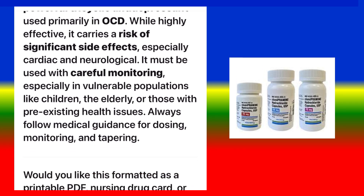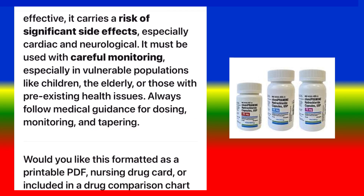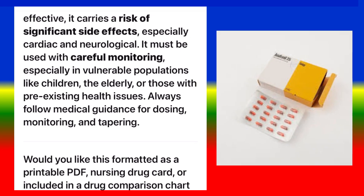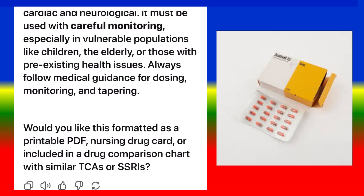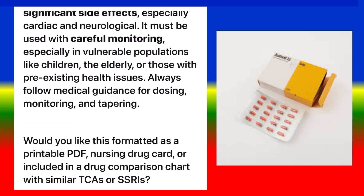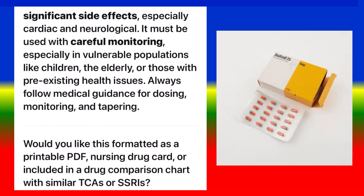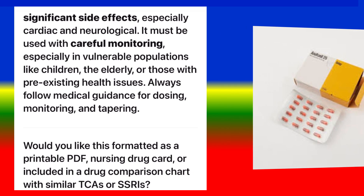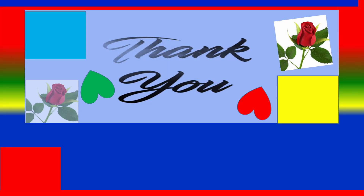Conclusion: Clomipramine (Anafranil) is a powerful tricyclic antidepressant used primarily in OCD. While highly effective, it carries a risk of significant side effects, especially cardiac and neurological. It must be used with careful monitoring, especially in vulnerable populations like children, the elderly, or those with pre-existing health issues. Always follow medical guidance for dosing, monitoring, and tapering. Thank you and have a nice day.